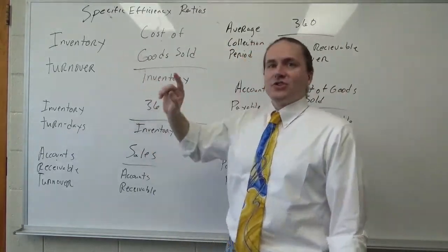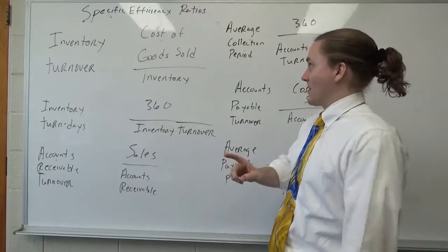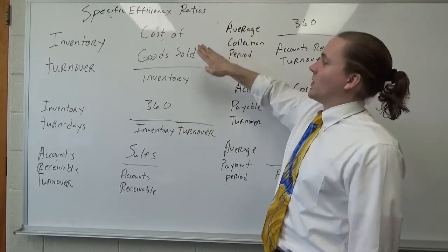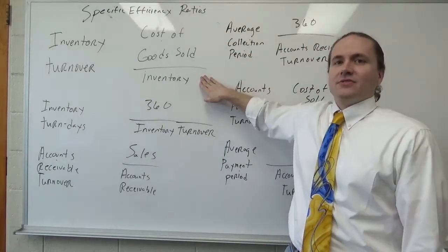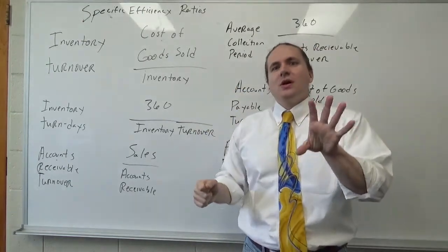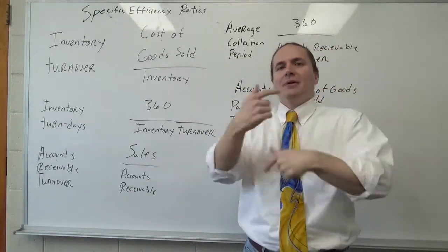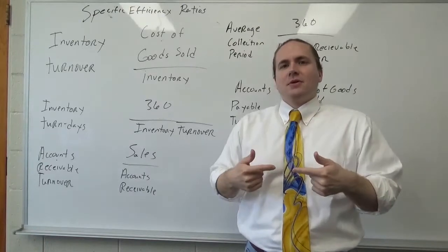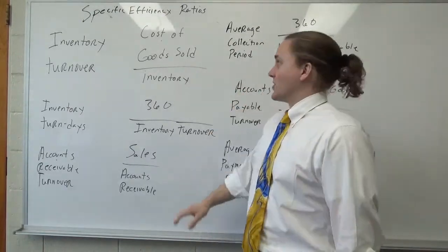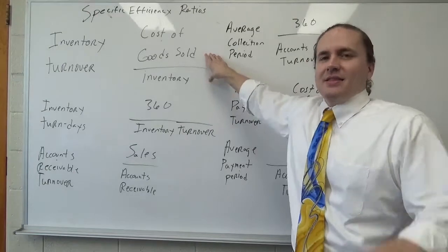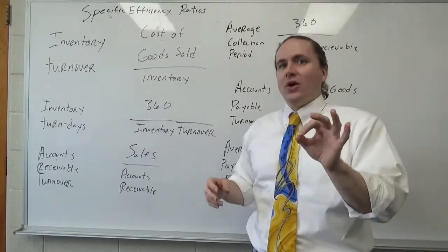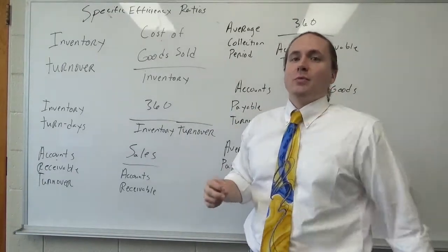The first is inventory turnover. You take the total amount of cost of goods sold and you divide it by the value of your inventory. That tells you on an average year how many times per year you turn over your inventory. So let's say I have the number 8 — that tells me that roughly 8 times per year I turn over my inventory.